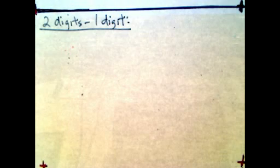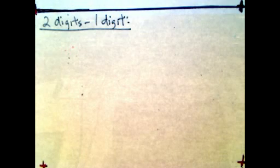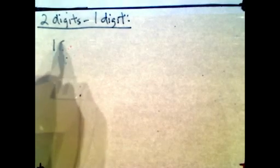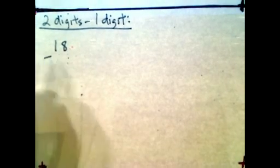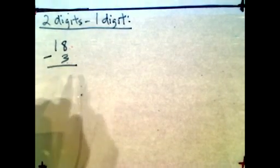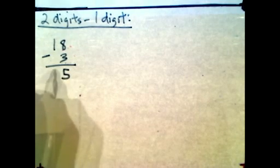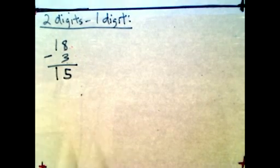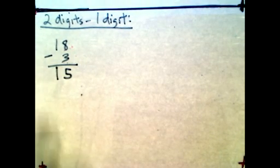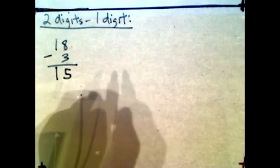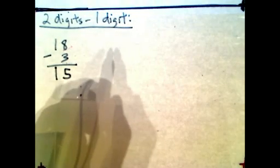Now let's do 2 digits minus 1 digit. Let's say you have 18 minus 3. 8 minus 3 gives you 5, and the 10 still stays there — bring it down. The answer is 15.